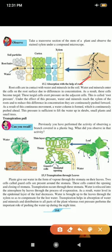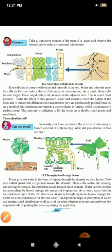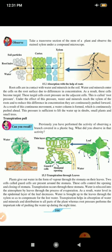Now, let us go to the next concept of transpiration pull. In the picture, you can see certain plants and some leaves and some cells. Can you recall? Previously, you have performed the activity of observing the branch covered in plastic bag. What did you observe in that activity? It was seen that the inner side of the bag had moisture. Now, look at the figure 15.3, transpiration through leaves.